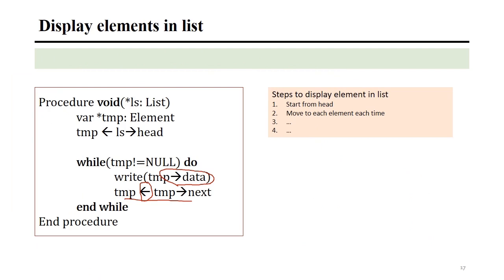To display elements in the list, we create a function and pass the list variable into it. We start from the head by providing a temporary variable TMP that points to the head. Since we know that the last element points to nil, we use a while loop with the condition that TMP is not equal to nil. Each time the loop runs, we move forward by setting TMP equal to TMP's next pointer. There will come a time when TMP points to nil, which is the end of the list, and the loop stops. This is how you display elements in the list — you can perform any operations you need inside the loop.